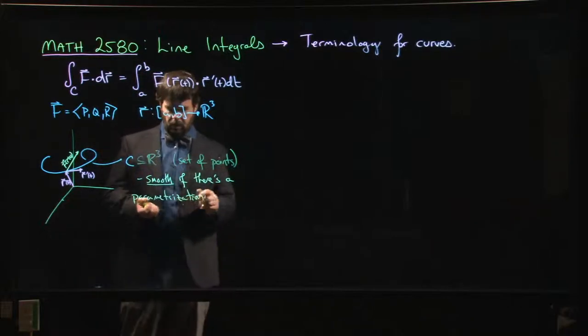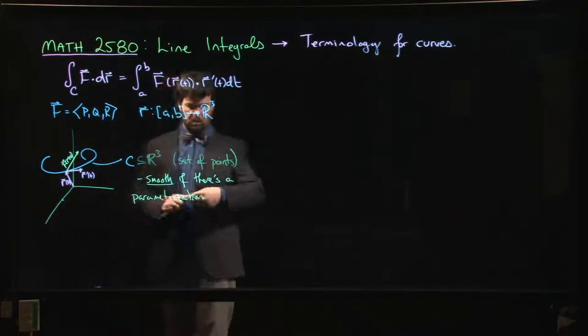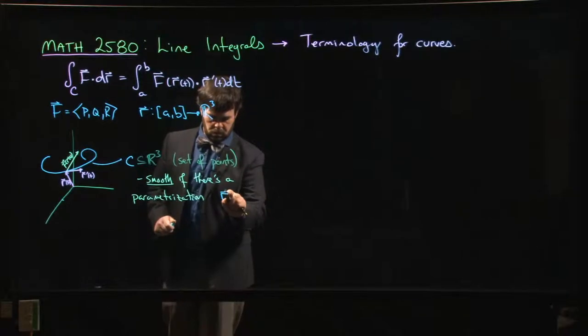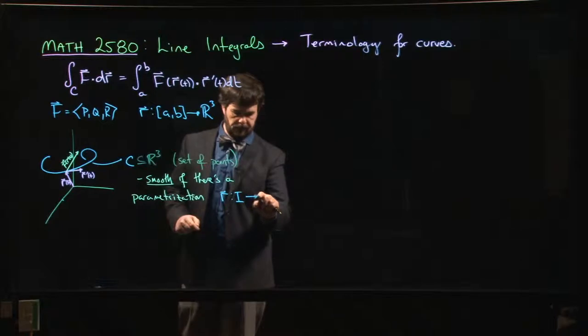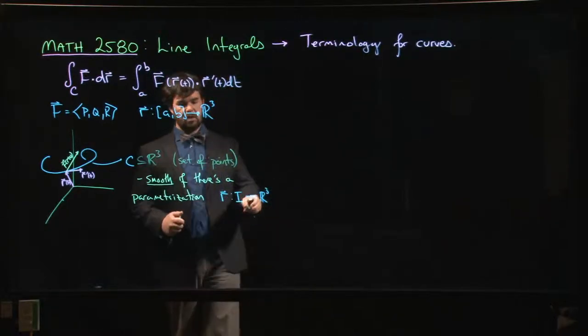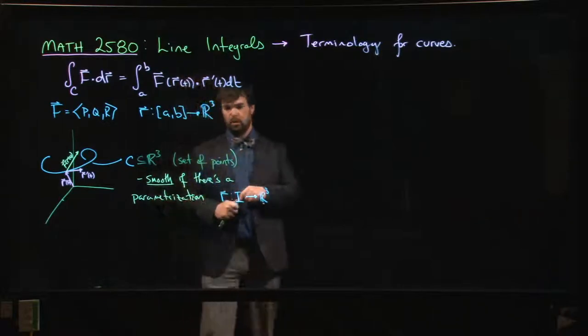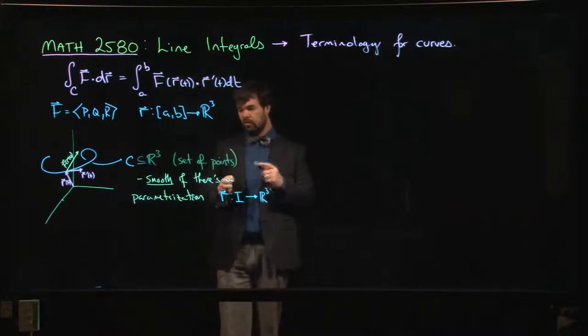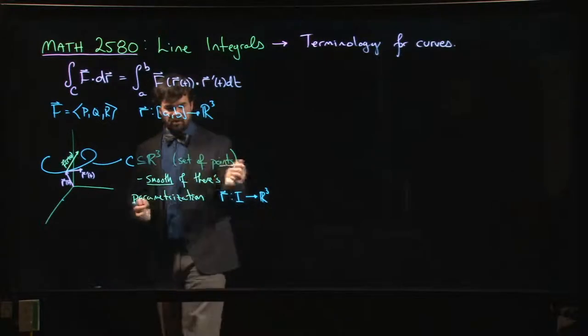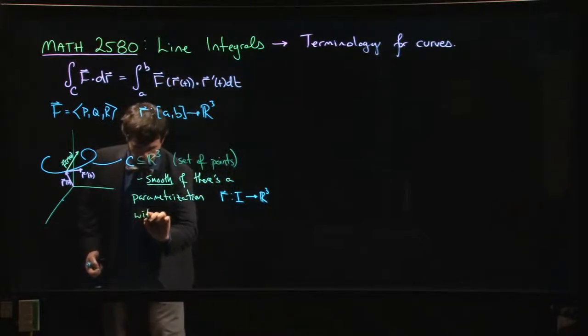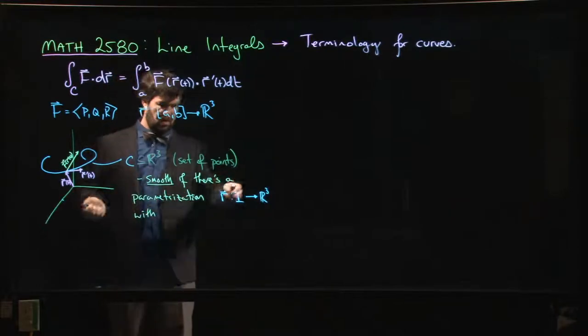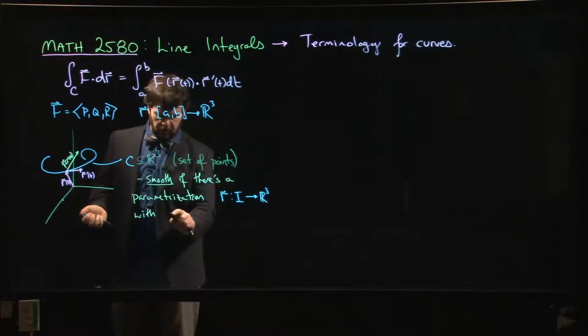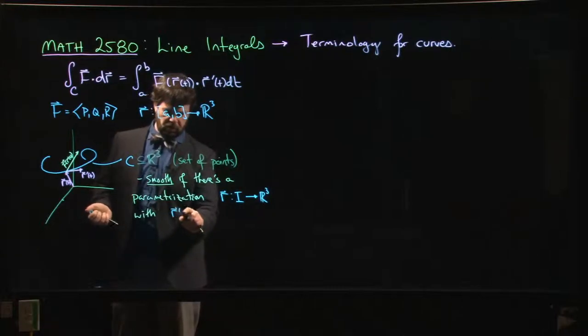So let's call it R, going from some interval I into R³. And again, you can replace three by your favorite n if you want to consider this in other contexts. So it's smooth if there's a parametrization R with—what does it have to have? It's got to have—well, it's got to be differentiable everywhere.